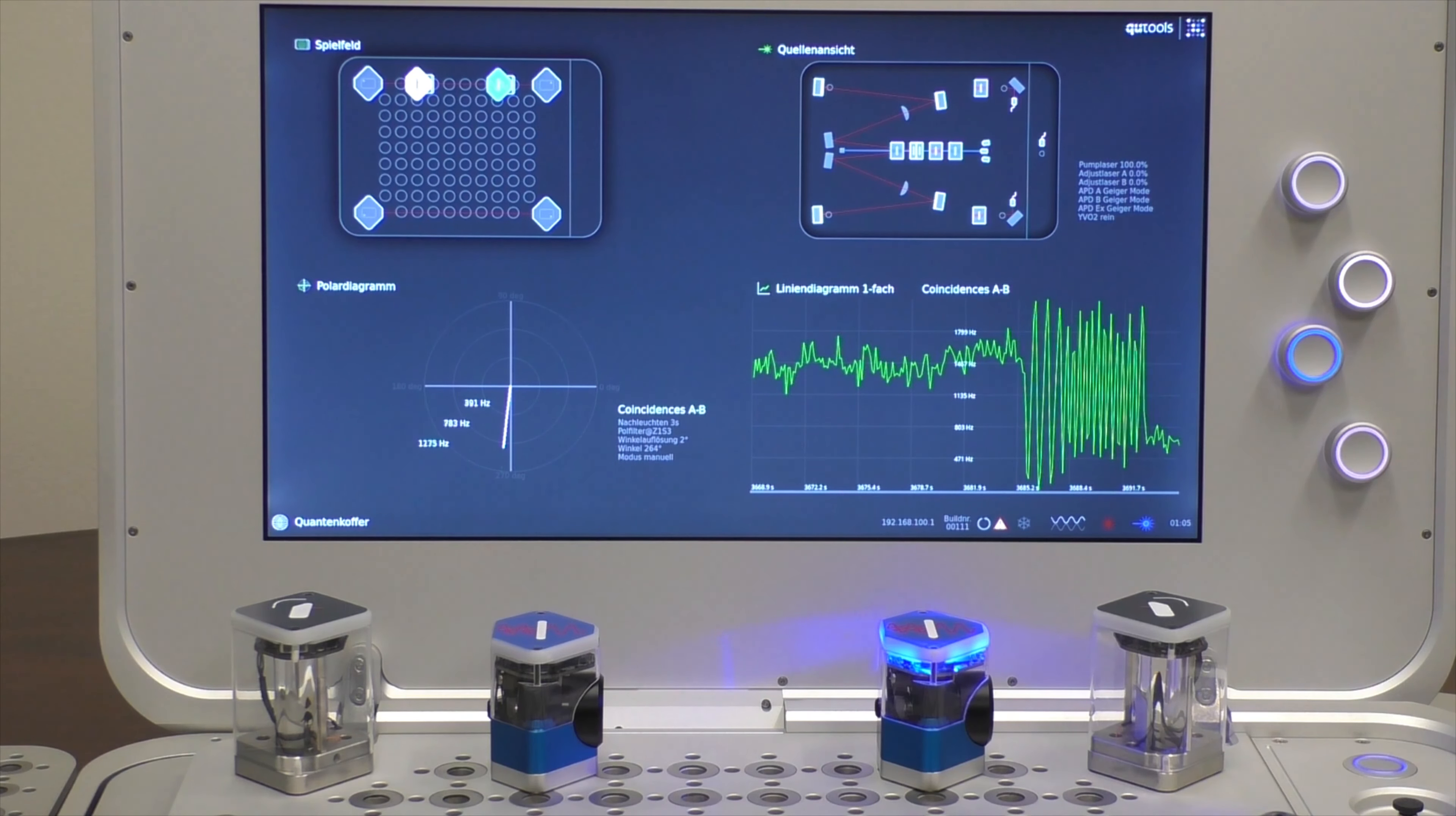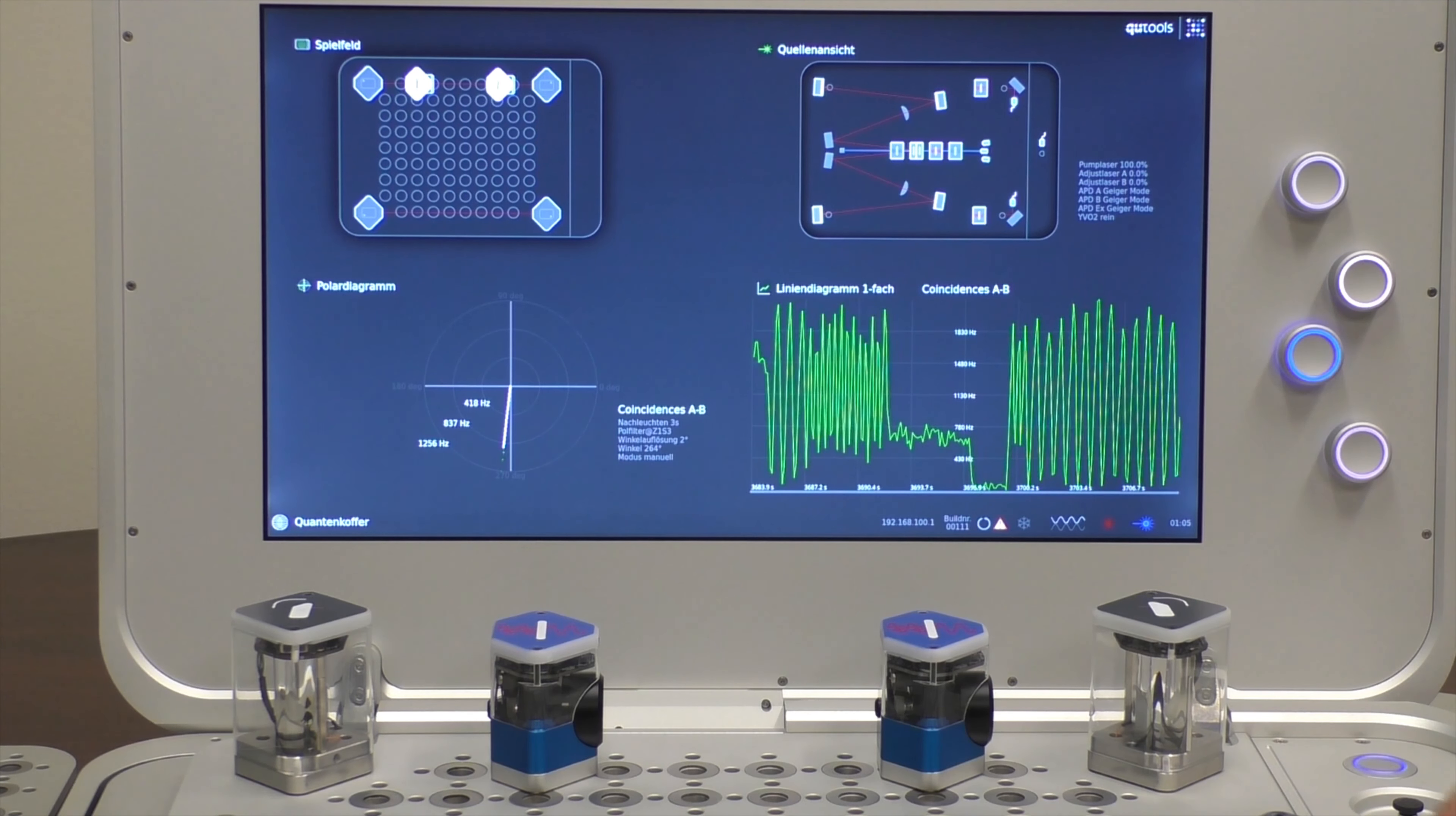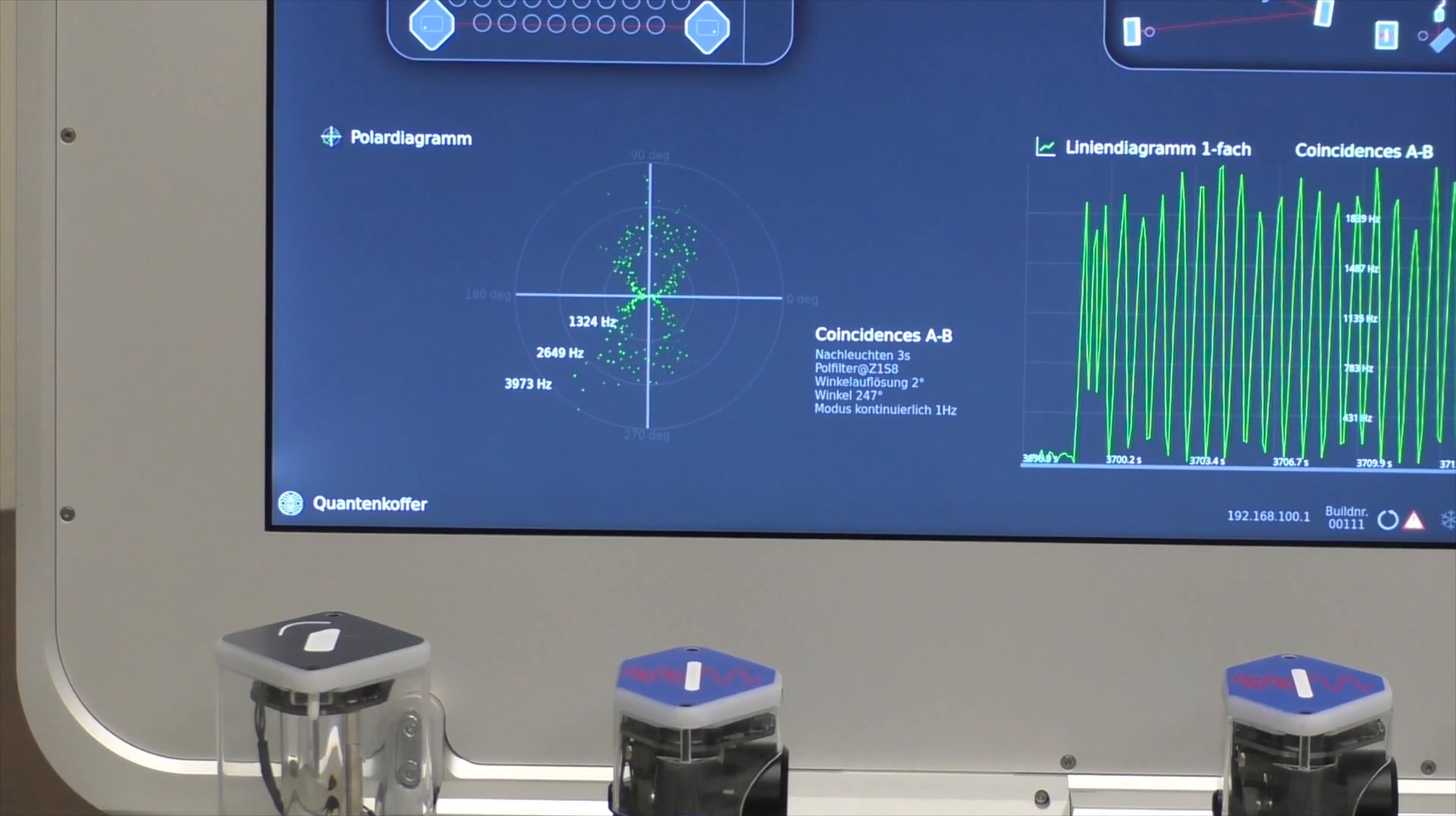And we also have another method of seeing that, which is down here in the bottom left quadrant where I just have to configure the view in the correct way such that in this polar plot we can set the angle of this polarizer as the angle of the polar plot and the radius of the polar plot will be the count rate.